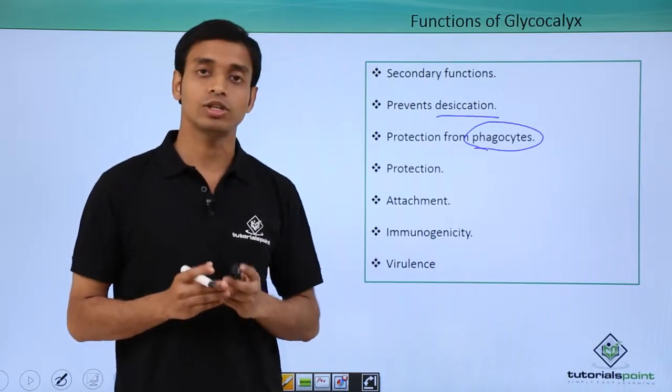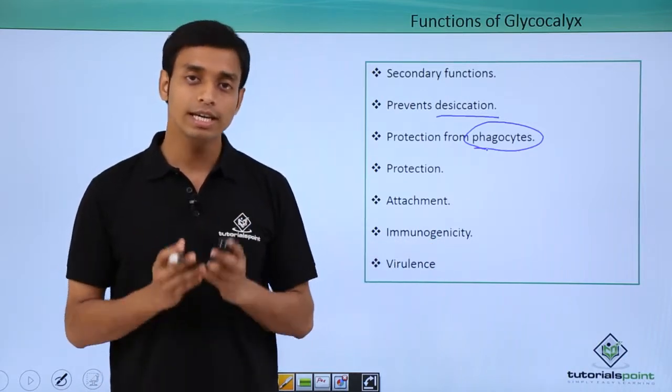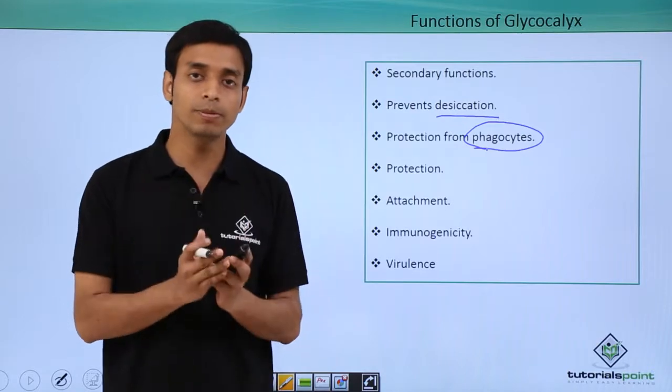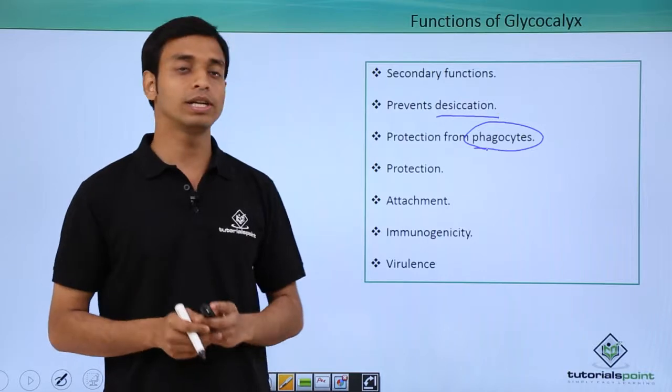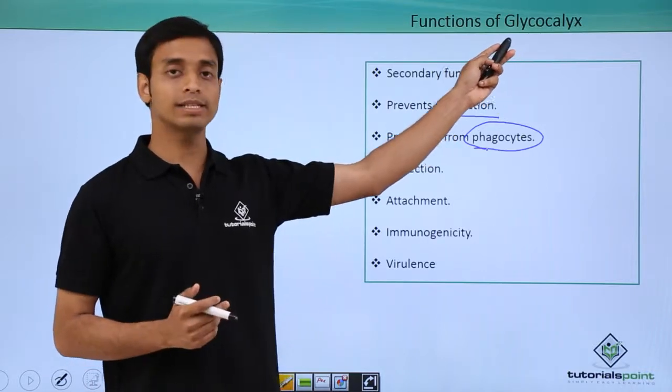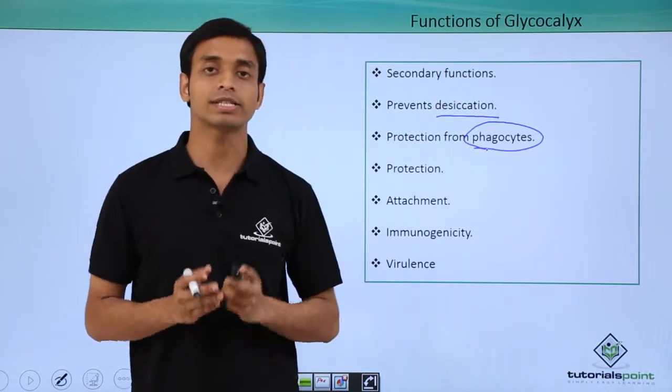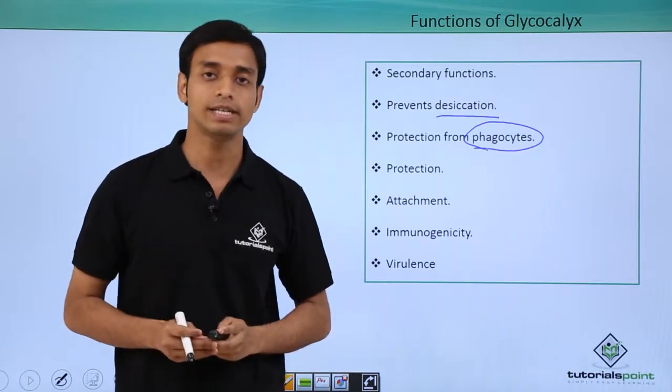They help in immunogenicity. Immunogenicity means they have the capability to trigger immune response in host organism. And most importantly, these layers of glycocalyx have virulence characteristics, that means they can cause diseases.